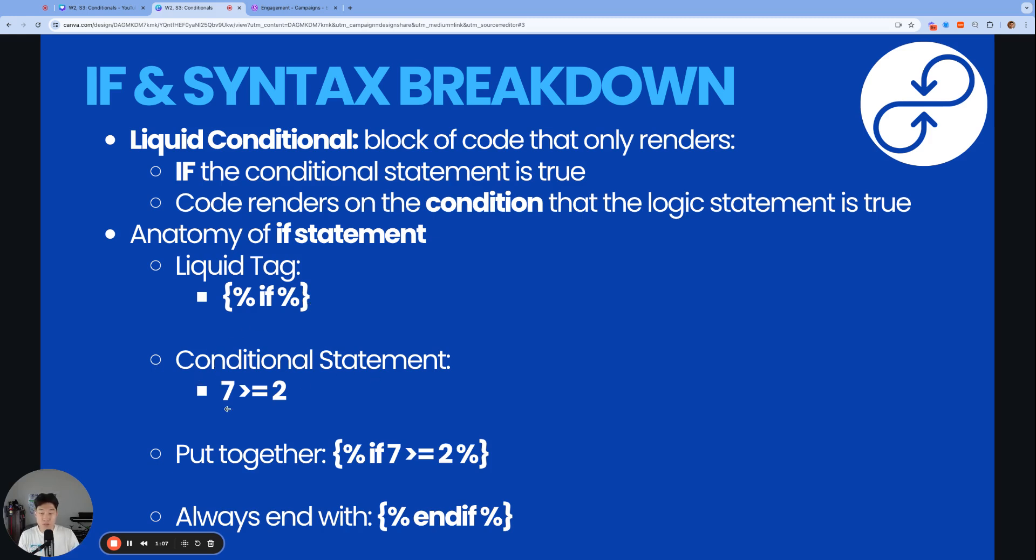And then next comes our conditional statement. In this case, our conditional statement is 7 is greater than or equal to 2, which is a true statement. Notice that we are using one of our comparison operators from a previous video. So we need these comparison operators to determine whether this conditional statement is true or false. So we put it together and we have curly bracket percentage if 7 is greater than or equal to 2, percentage, curly bracket.